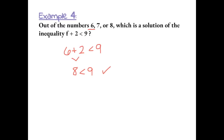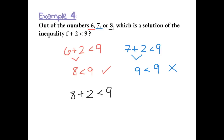Let's try plugging in 7. We get 7 plus 2 is less than 9, which simplifies to 9 is less than 9. This is not a true statement because 9 is not less than 9 — it's equal to it. Lastly, plugging in 8 gives us 8 plus 2 is less than 9, and 10 is less than 9 is not a true statement. So the number 6 is our only solution for this inequality.